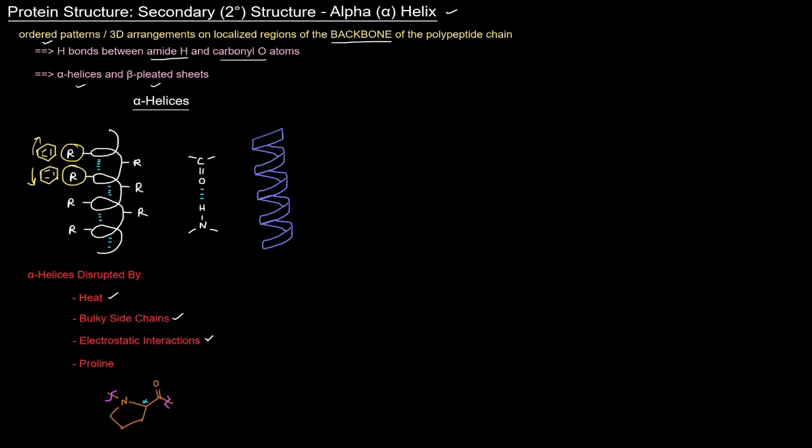Now proline. Proline is kind of unique as an amino acid because its side chain actually goes back and binds to the nitrogen of the NCC backbone of the polypeptide. If you had a proline just added into the alpha helix, that can disrupt the ability of the hydrogen bonds to exist in the alpha helix. The hydrogen bonds are super important in holding the structure together.